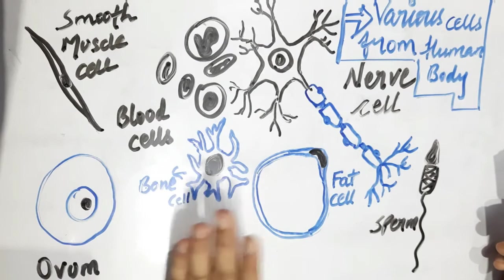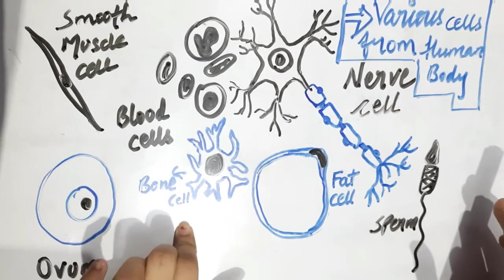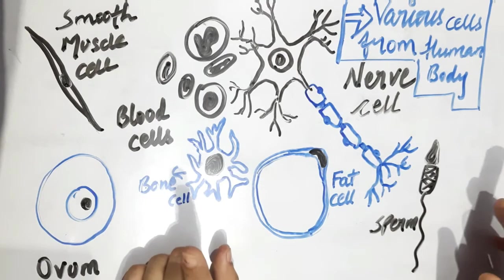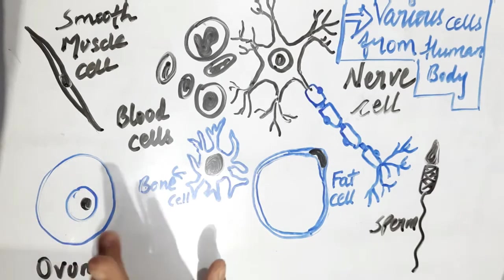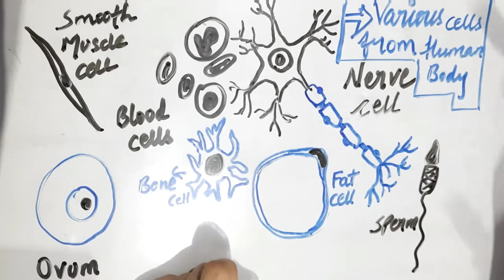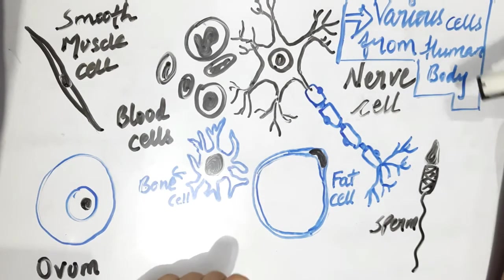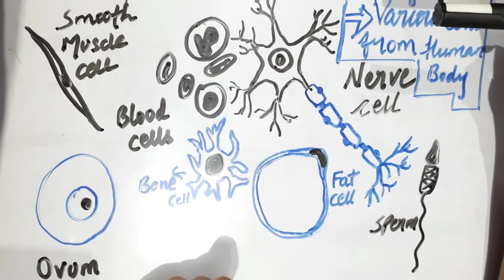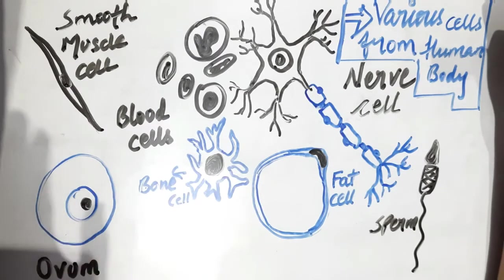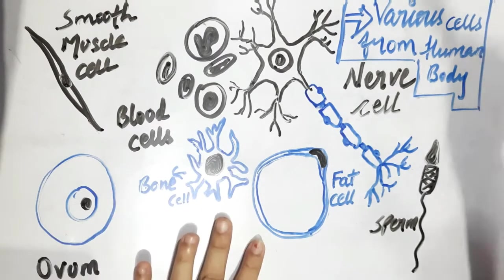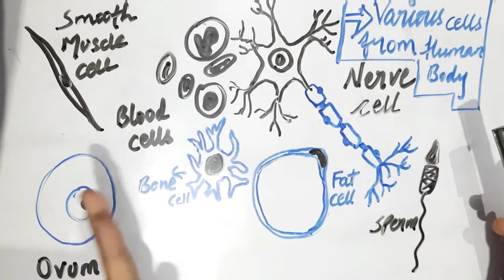Let me revise what I told you about unicellular organisms — when one cell makes up the whole body, that one cell is doing all the work. I explained this in the second video. I also explained multicellular organisms, and I gave you the example of the human body. In a multicellular organism, different cells perform different functions.